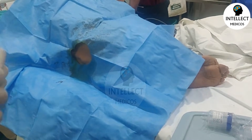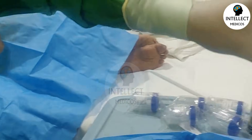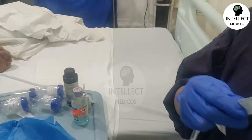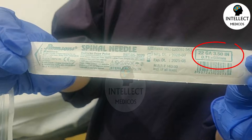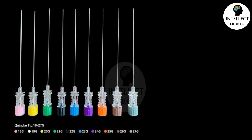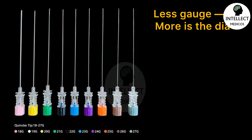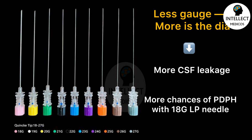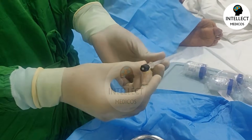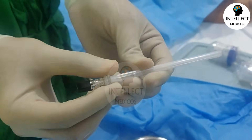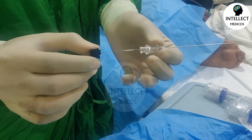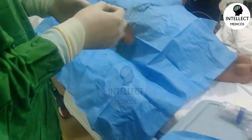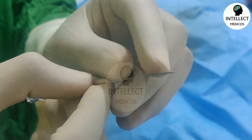Next, take the spinal needle - the Quincke-Babcock needle. The needle used here is 22 gauge with a black hub. These needles come in different sizes from 18 gauge to 27 gauge. The lower the gauge, the larger the bore or diameter - an 18 gauge has more diameter, causing a larger rent in the dura, more CSF leakage, and therefore more PDPH (post-dural puncture headache). We are using the 22 gauge because this patient has suspected bacterial meningitis where the CSF can be very thick and difficult to aspirate through a 26 or 27 gauge needle.